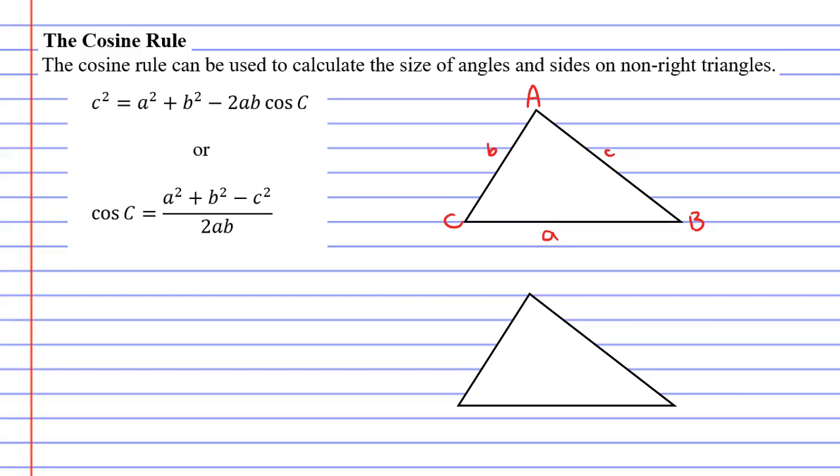Now if we look to the left side you'll see two formulas. One of them is used to calculate the length of a side, and the other one is used to calculate the size of an angle.